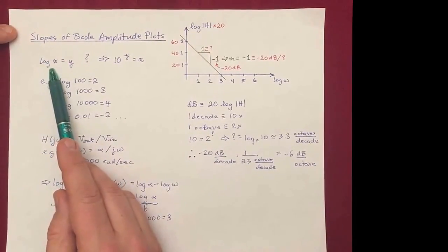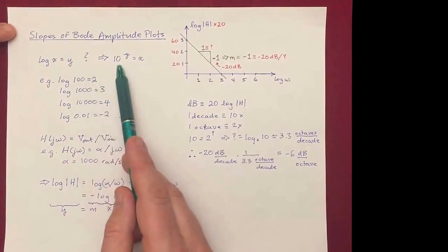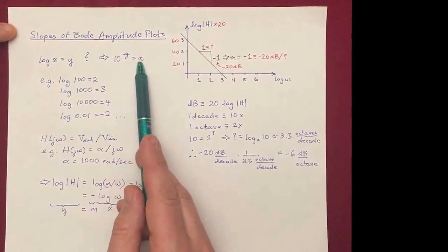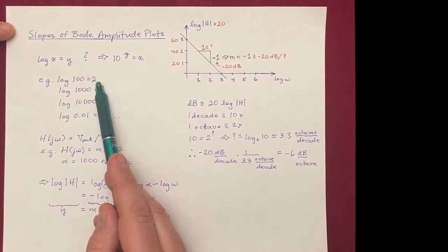So you have to remind yourself of what a logarithm is. So a log of x equals y, what does that mean? It means basically that 10 to the y would equal x. So for example, the log of 100 equals 2, because 10 to the 2 is equal to 100.